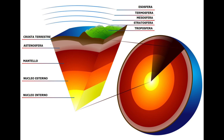And finally, going deeper, we find the outer nucleus and the inner nucleus. In the outer nucleus we generate the magnetic field, while the inner nucleus is solid, composed of iron and nickel.